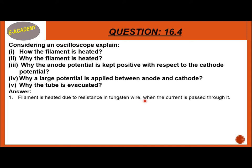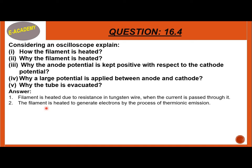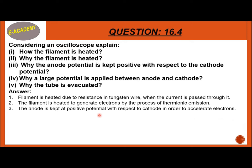Number 1: The filament is heated by an electric current. Number 2: The filament is heated so that it generates electrons by the process of thermionic emission. Number 3: The anode is kept at positive potential with respect to the cathode in order to accelerate the electrons.